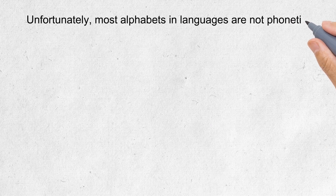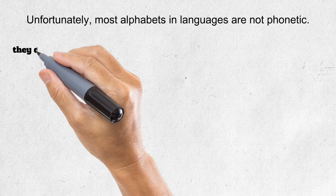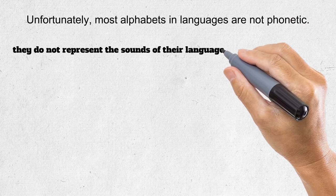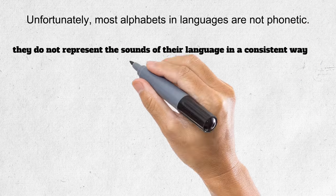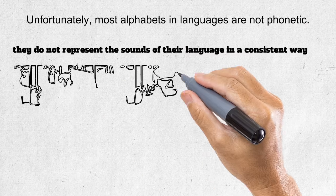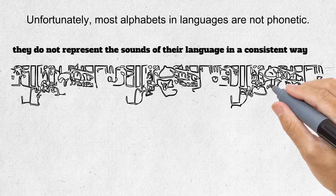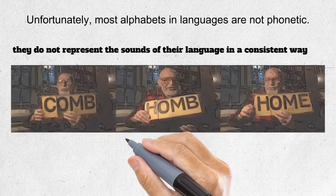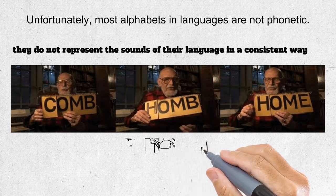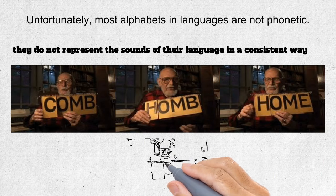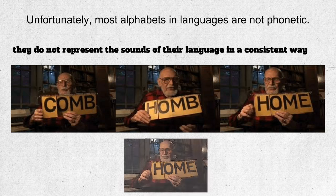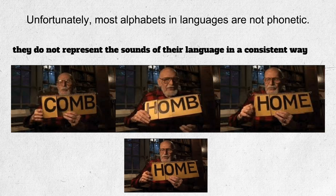Unfortunately, most alphabets in languages are not phonetic — they do not represent the sounds of their language in a consistent way, especially English. This example is pretty relevant: words like 'come,' 'home,' and 'some' all end differently in sound despite similar spellings.